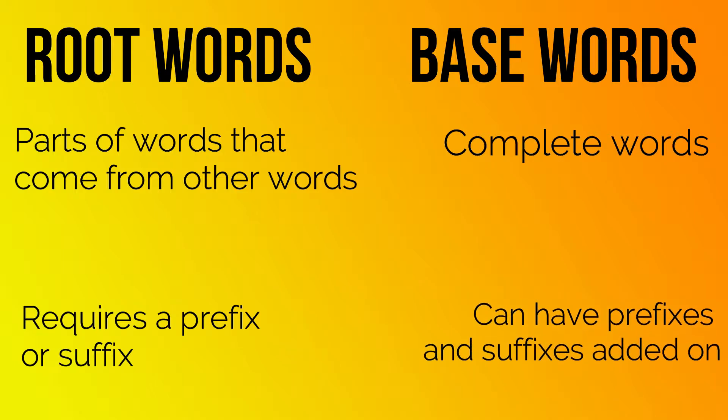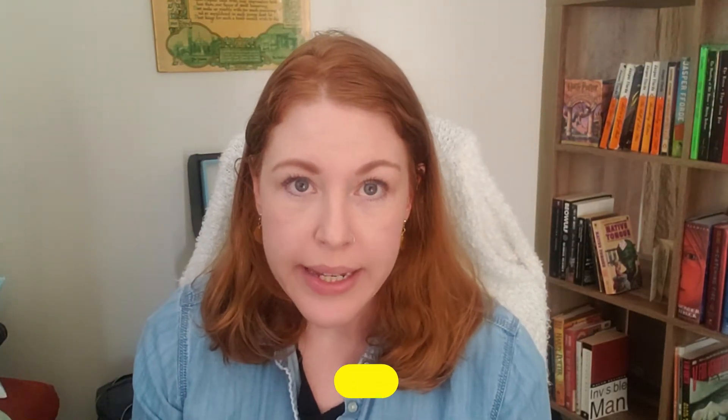Base words can have prefixes or suffixes added on. All of these categories are known as morphemes. We can break up a word into these morphemes to better understand the definition.